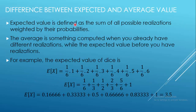Expected value is defined as the sum of all possible realizations weighted by their probabilities. The average is computed when you already have different realizations, while the expected value is determined before you have realizations — this is the main difference.